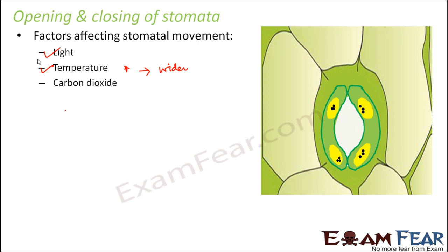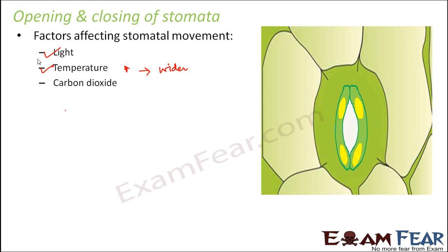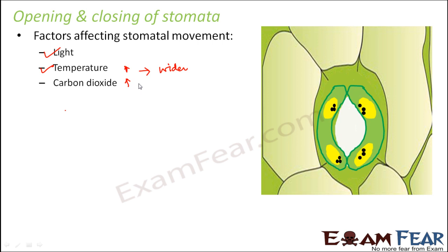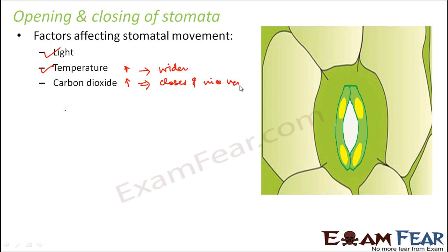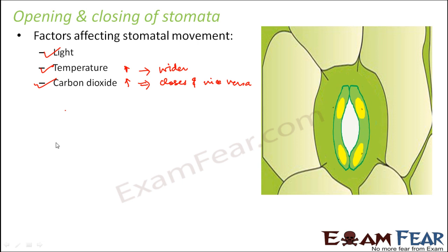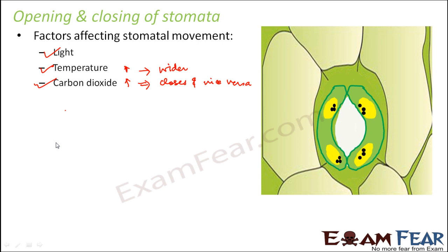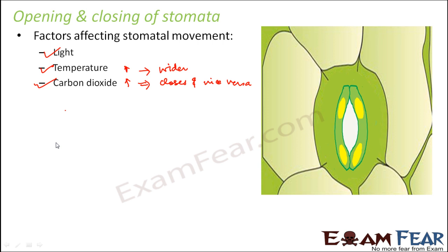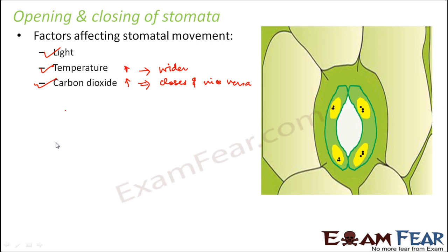Next is carbon dioxide. The concentration of carbon dioxide is inversely proportional to stomatal movement — as the concentration of CO2 increases, the stomata closes, and vice versa. Importantly, it is the internal concentration of CO2 within the leaf or stomatal apparatus that impacts stomatal behavior, not the external carbon dioxide concentration in the surroundings.